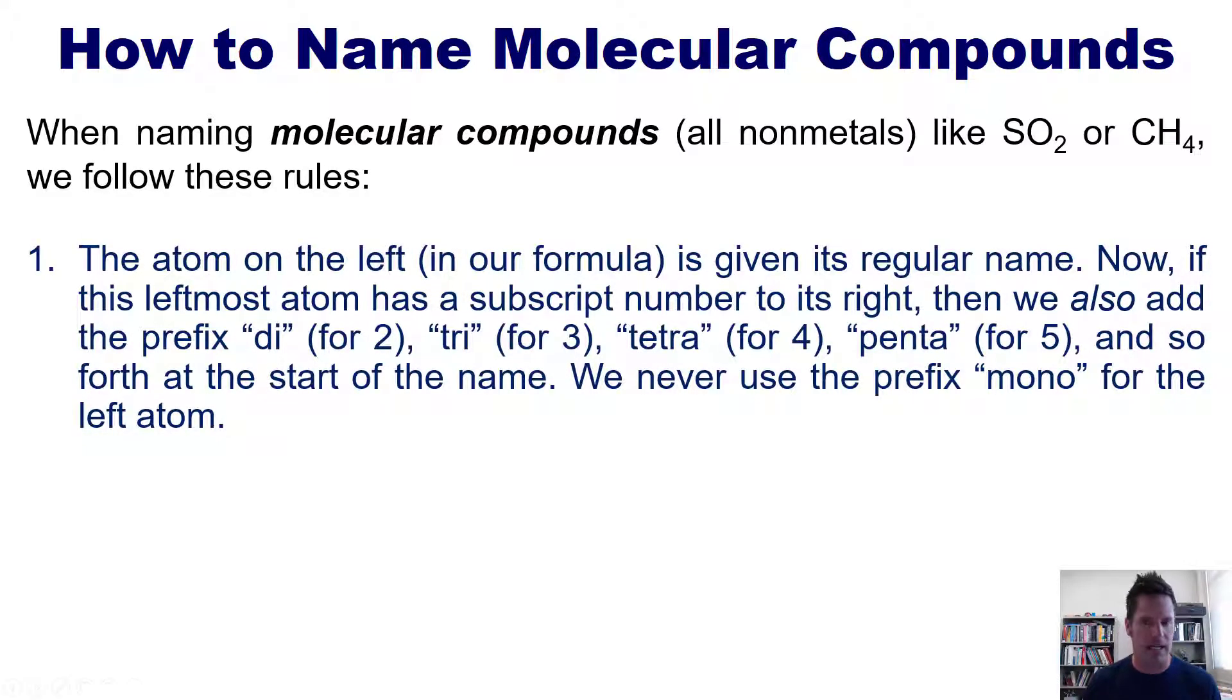Rule one: The atom on the left in our formula is given its regular name straight off of the periodic table. Now, if this leftmost atom has a subscript number to its right in the formula, then we also add the prefix di for two, tri for three, tetra for four, penta for five, and so forth at the start of the name. We never use the prefix mono for the left atom.